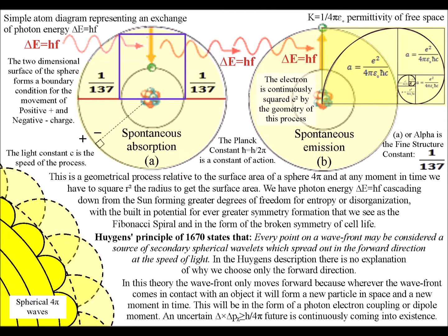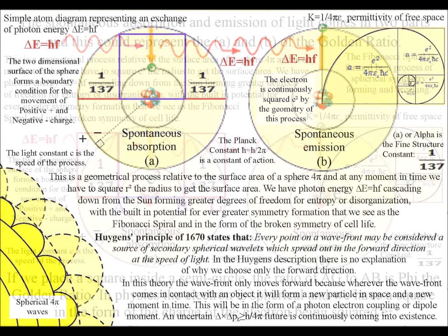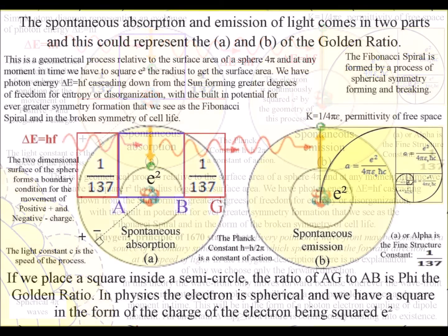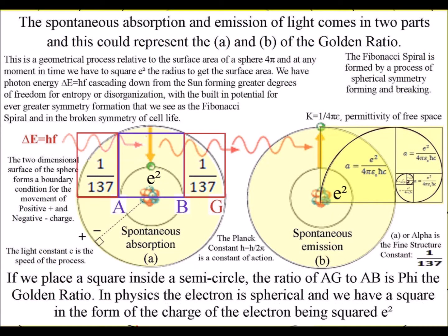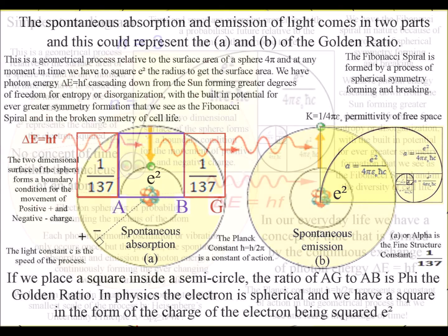Whenever our three-dimensional world changes, there is an exchange of photon energy with the absorption and emission of light. This is called a photon-electron coupling, or dipole moment, and it is relative to the light photon and the spherical electron probability cloud of an atom.